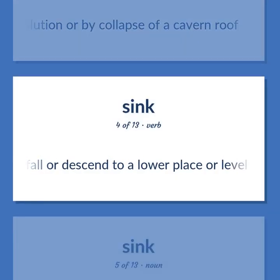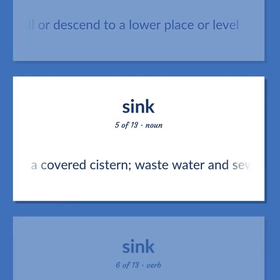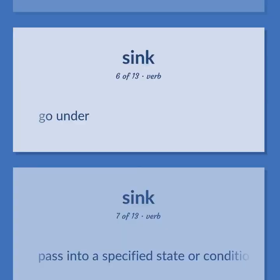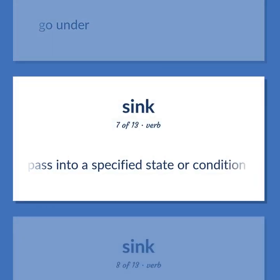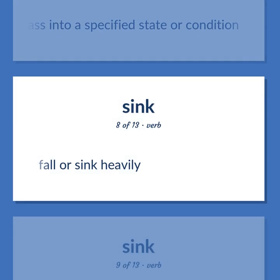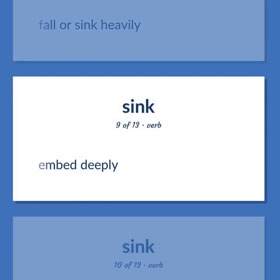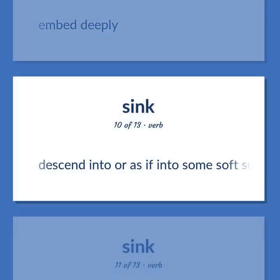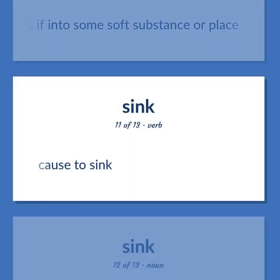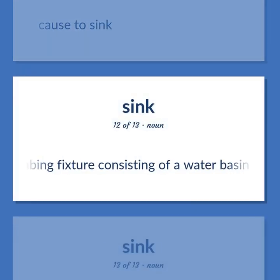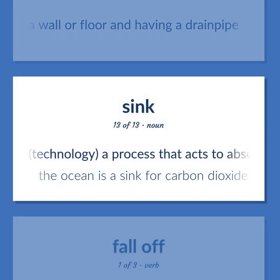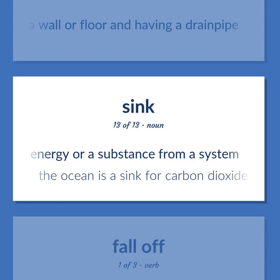Fall or descend to a lower place or level. A covered cistern — waste water and sewage flow into it. Go under. Pass into a specified state or condition. Fall or sink heavily. Embed deeply. Descend into or as if into some soft substance or place. Cause to sink. Plumbing fixture consisting of a water basin fixed to a wall or floor and having a drainpipe. Technology: a process that acts to absorb or remove energy or a substance from a system — the ocean as a sink for carbon dioxide.